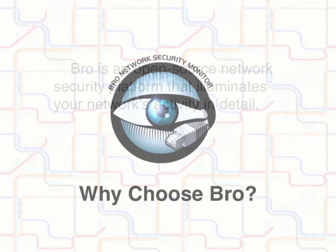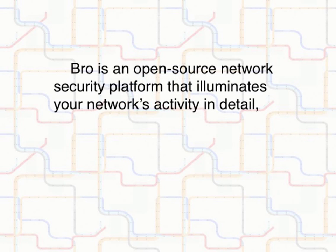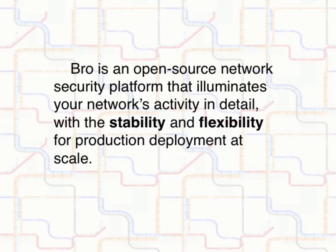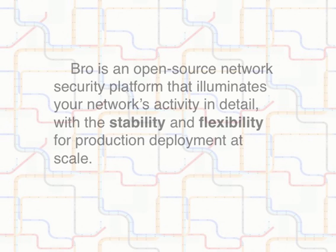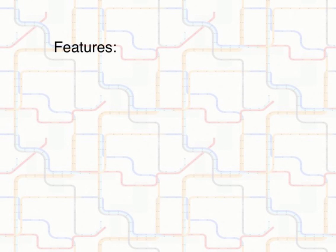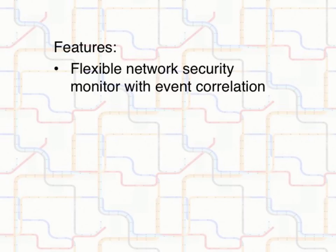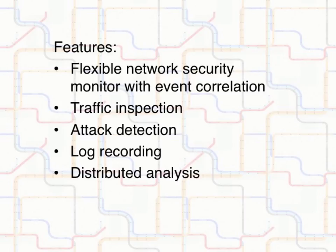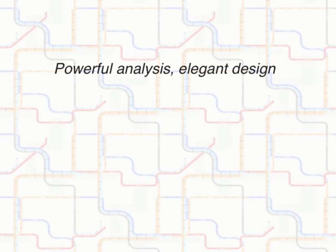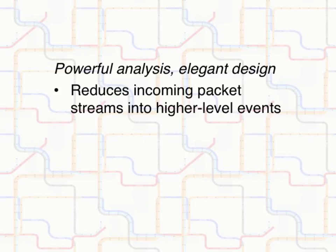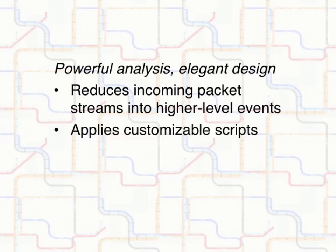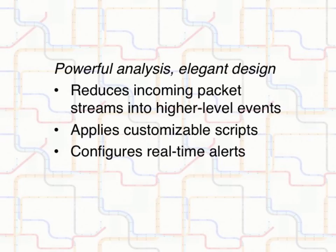Why choose Bro? Bro is an open-source network security platform that illuminates your network's activity in detail with the stability and flexibility for production deployment at scale. Bro's features include a flexible network security monitor with event correlation, traffic inspection, attack detection, log recording, distributed analysis, and full programmability. Bro reduces incoming packet streams into higher-level events and applies customizable scripts to determine the necessary course of action.